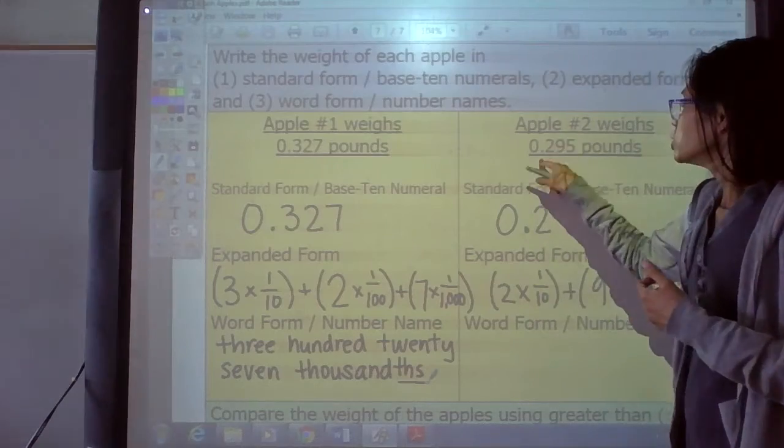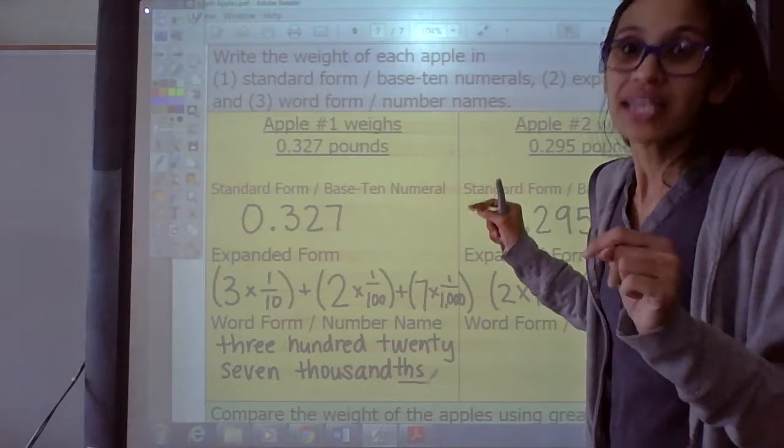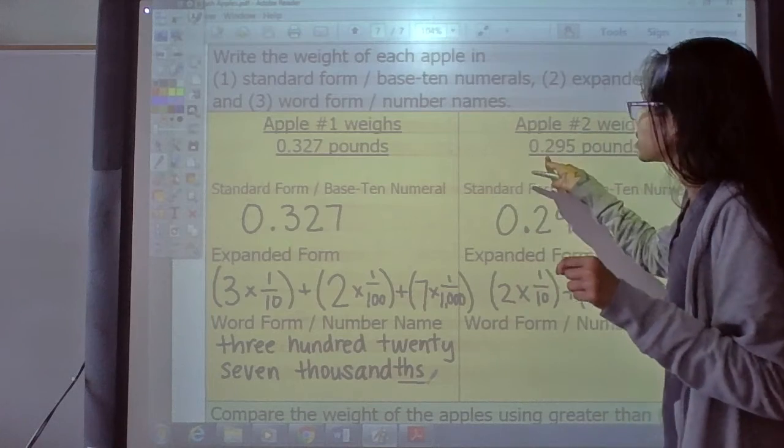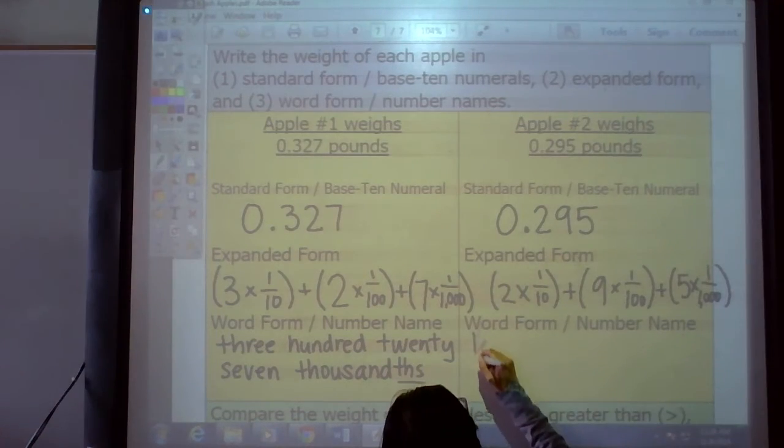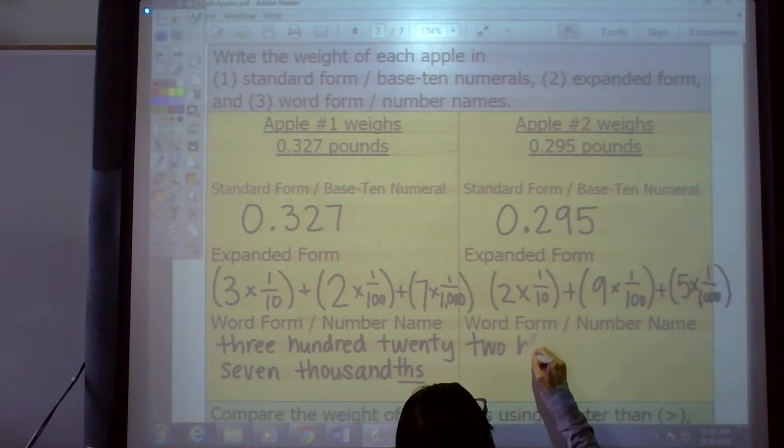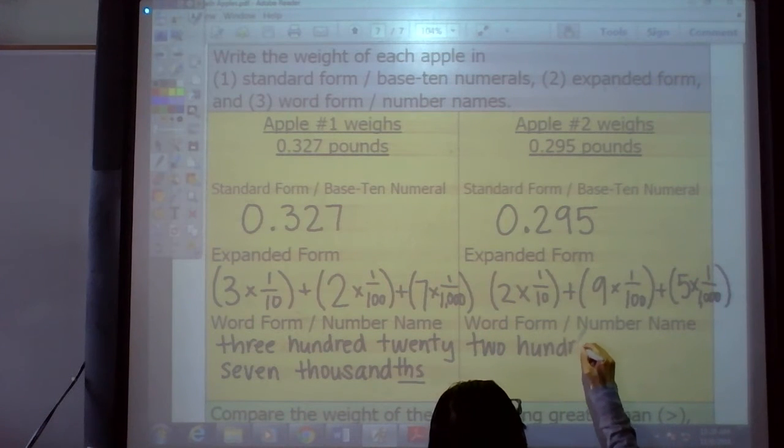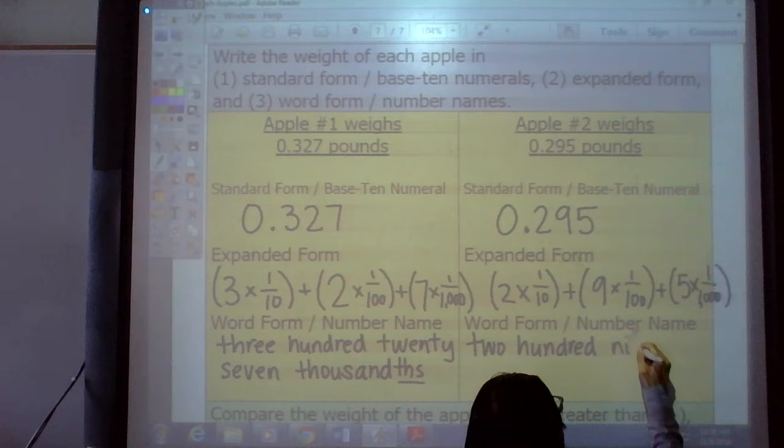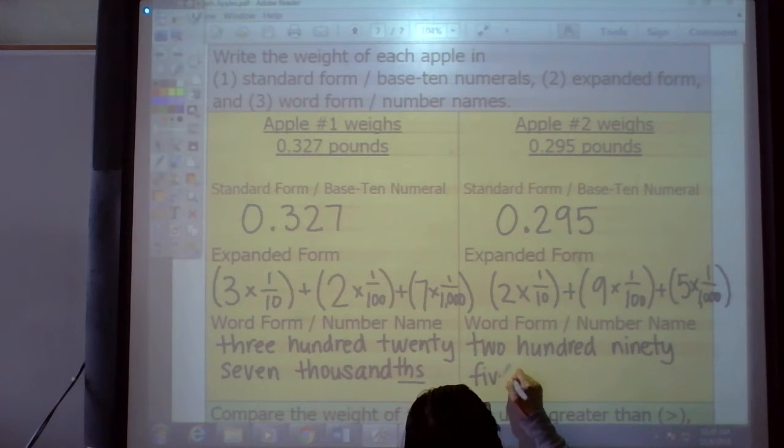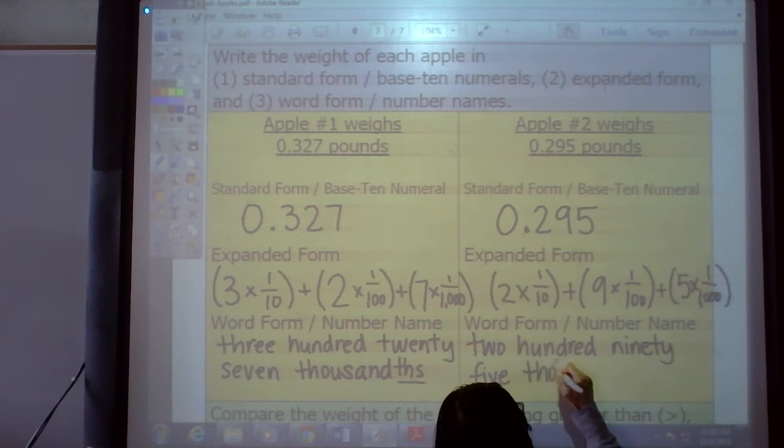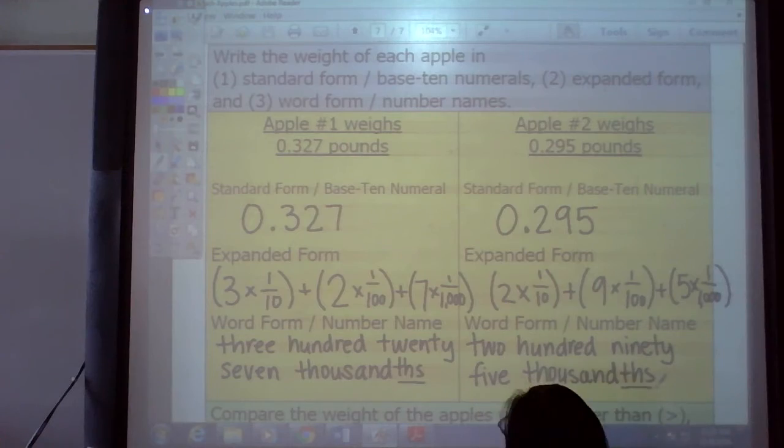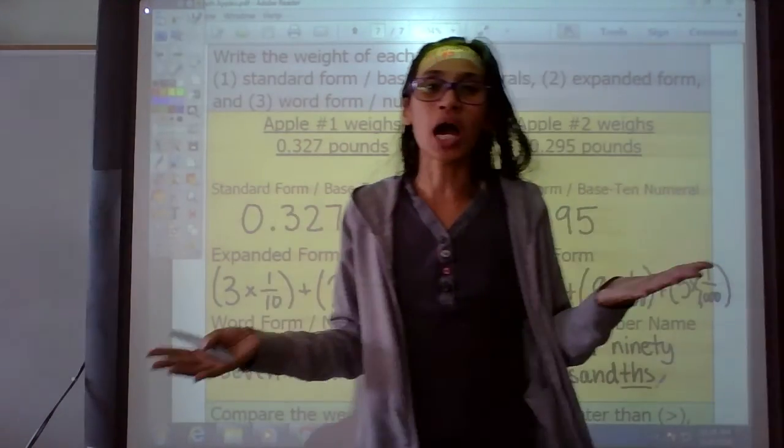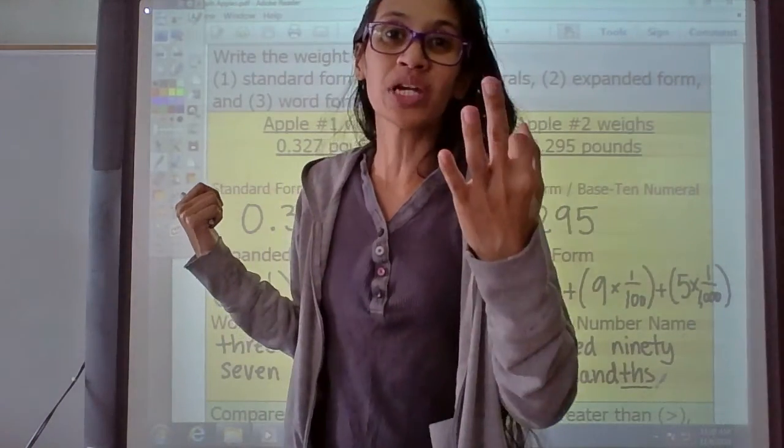Same way. Two hundred ninety-five. What? Tenths, hundredths, thousandths. Two hundred ninety-five thousandths. Write that down. Two hundred ninety-five thousandths. Write the word thousand with a THS at the end. Bam. We are done.